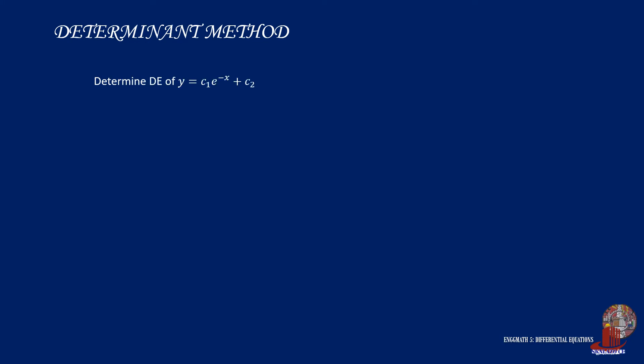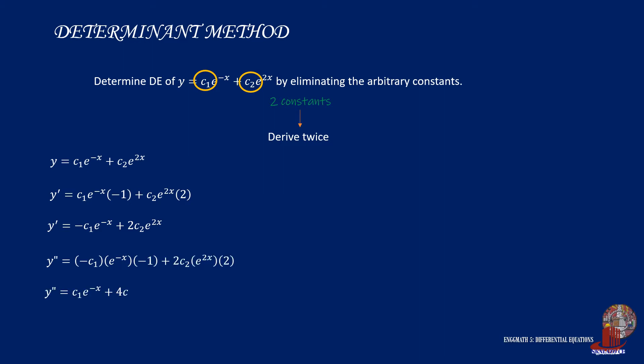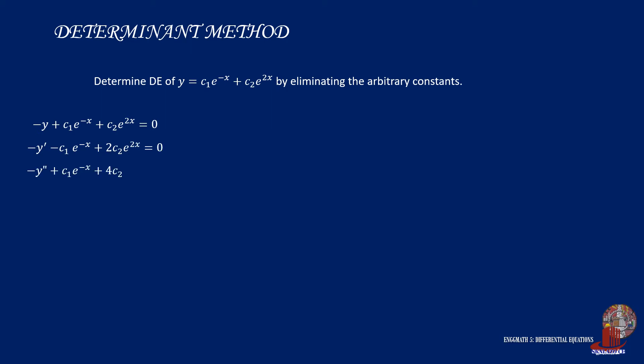Let's attempt to solve the same example previously given using the determinant method. Again, two constants would require the second derivative of y. Let's convert the three equations to be equated to zero. From the three equations, we form a matrix using the terms as elements. Don't forget that this matrix is equated to zero.